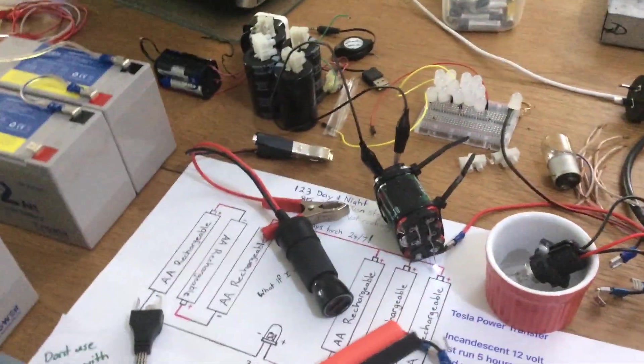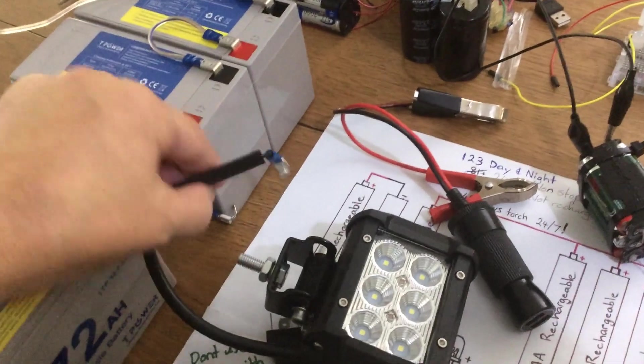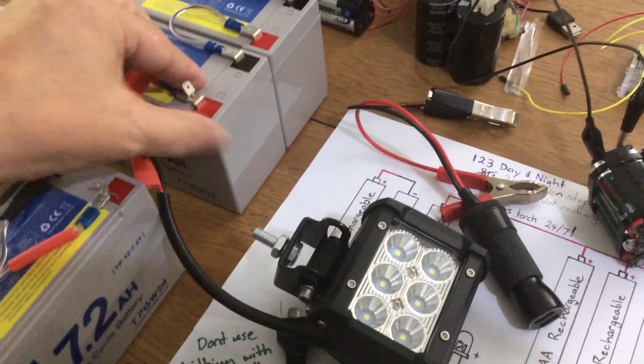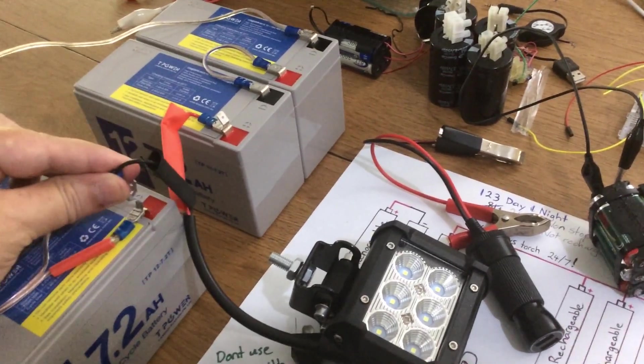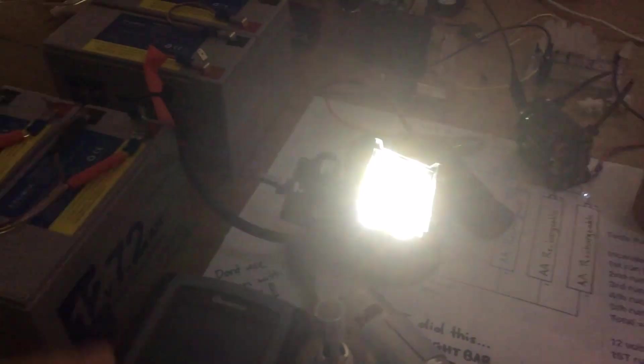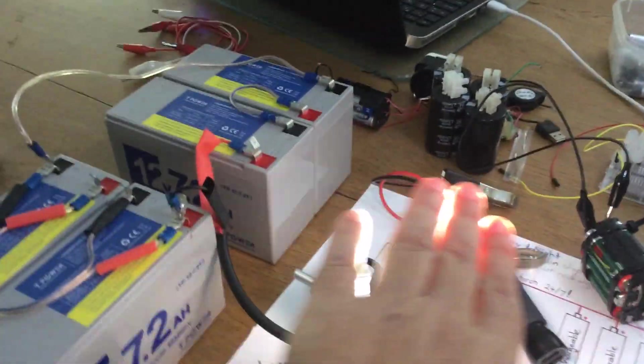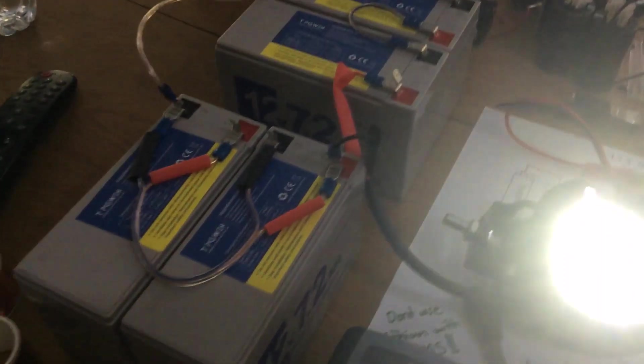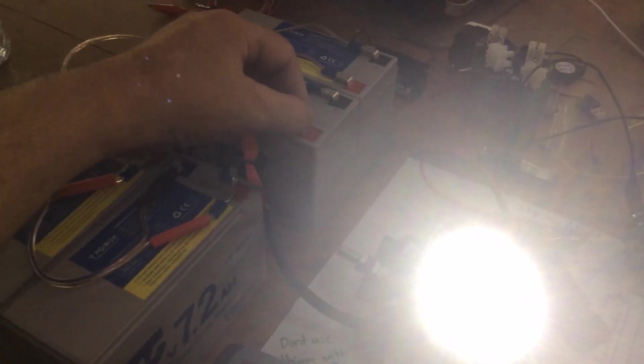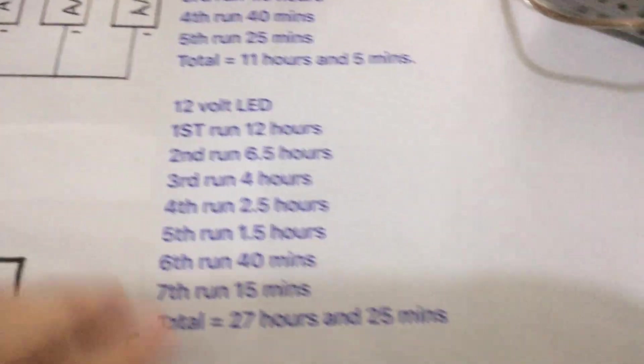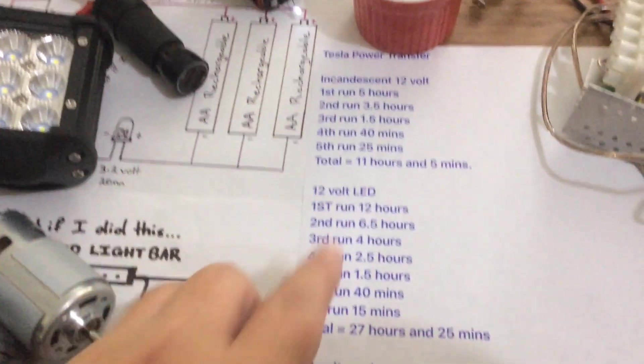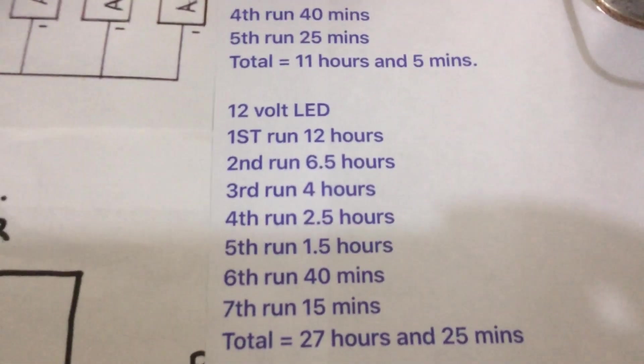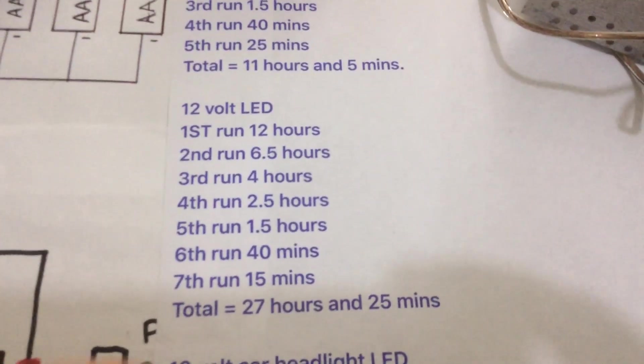The next one I did was this larger 12 volt LED light. We'll connect that up, I'll show you how bright that is. Warning: bright light. Okay, so that's clearly bright enough. We had another power outage last night which I think is going to be a regular occurrence from here on in. That light ran for 12 hours on the first run.